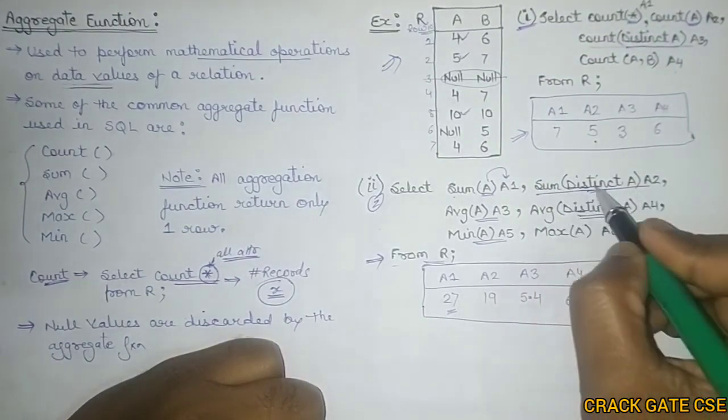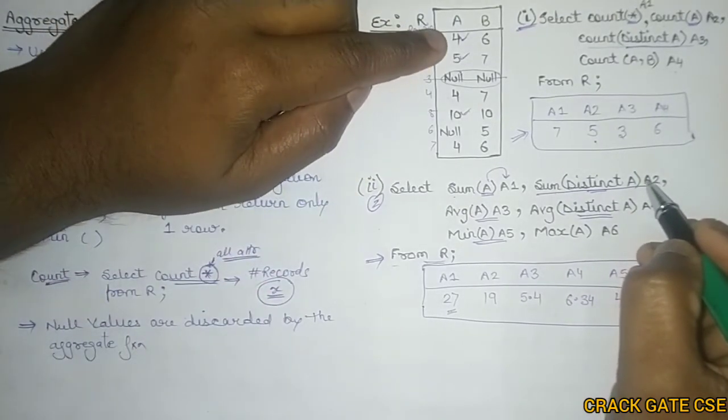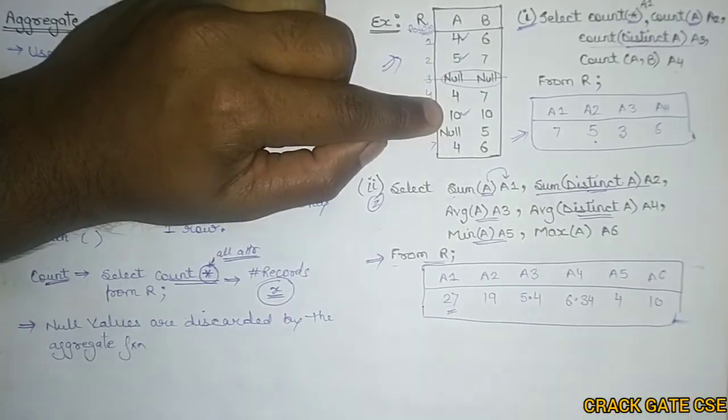Now we have to sum the distinct value of A and store it in A2. So what are the distinct values? 4, 5, 10 are the distinct values. What will be the sum? 19. So we are storing 19 in A2.